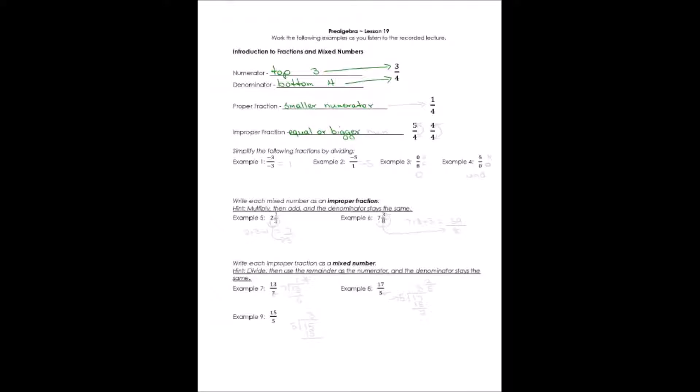An improper fraction has an equal or bigger numerator. If the numerator is the same as the denominator, like in 4 over 4, then it's improper. But if the numerator is bigger than the denominator, as in 5 over 4 or 5 fourths, it's also improper. So either one of those makes an improper fraction. Proper fraction, smaller numerator. Improper fraction, equal or bigger numerator.